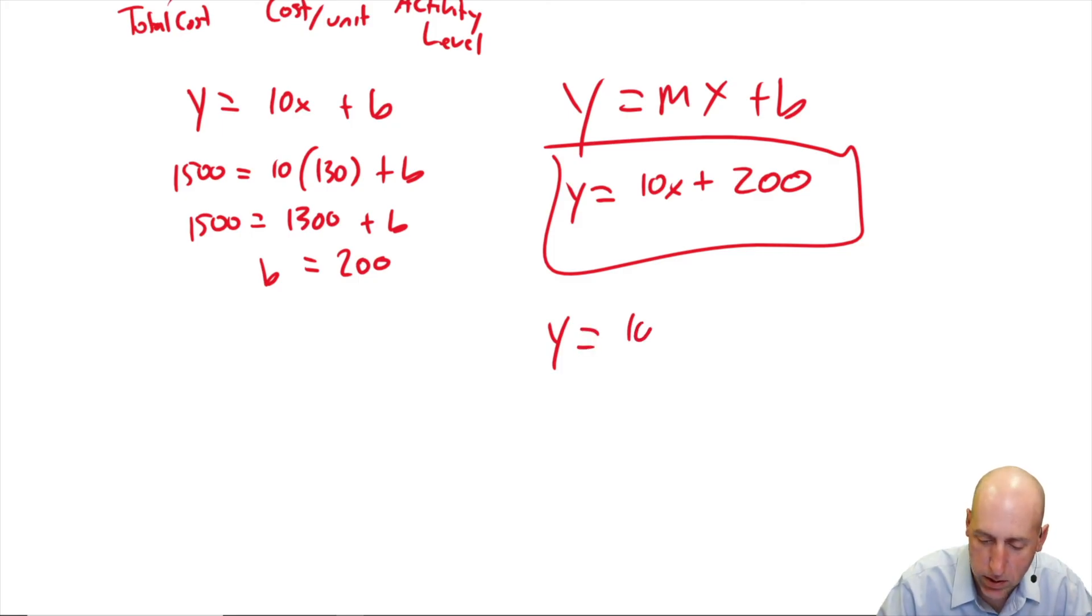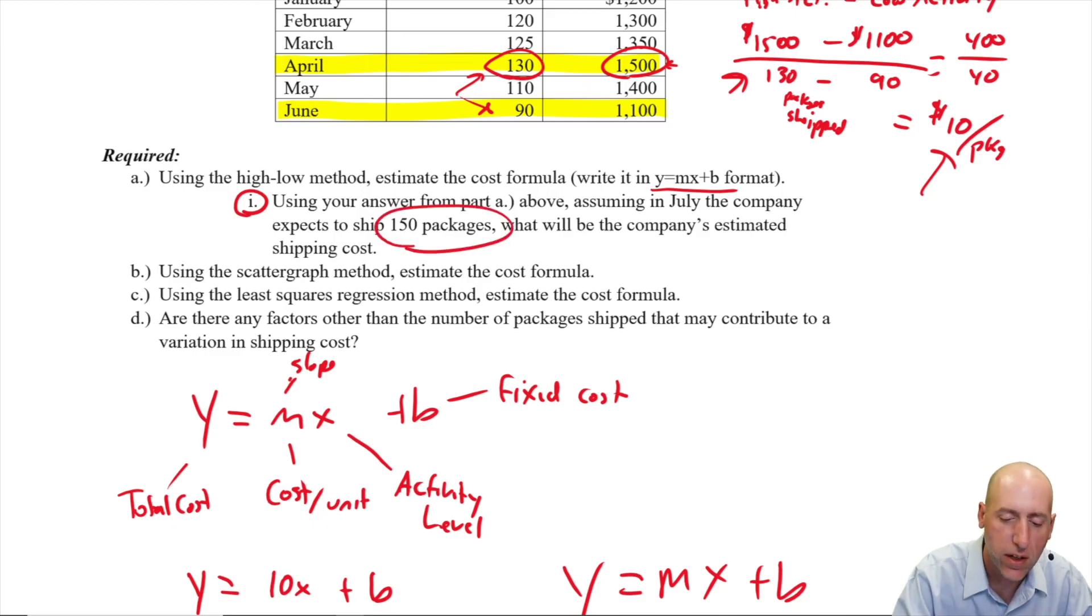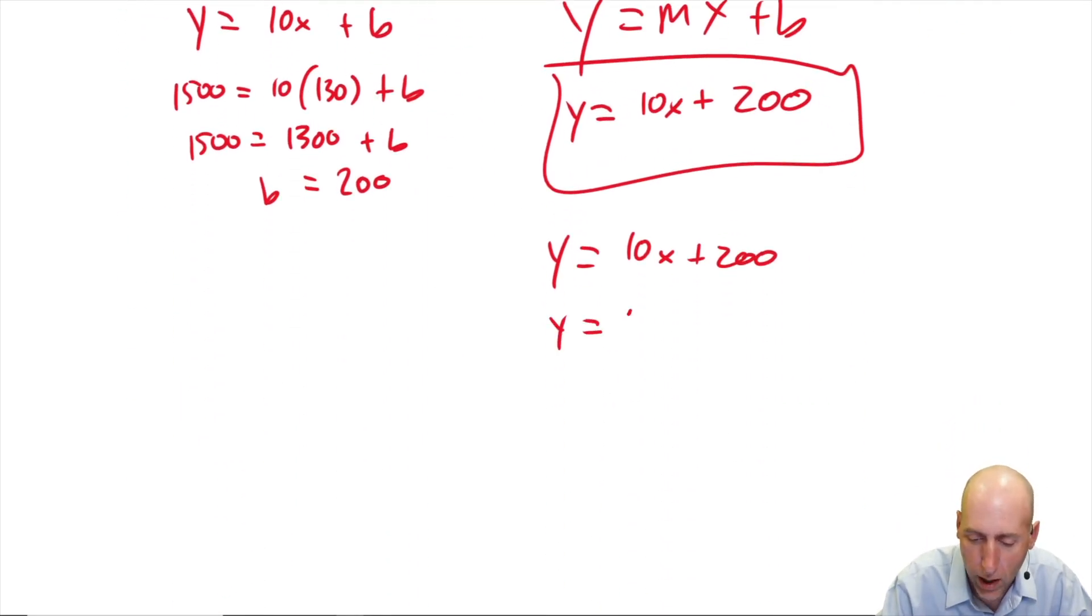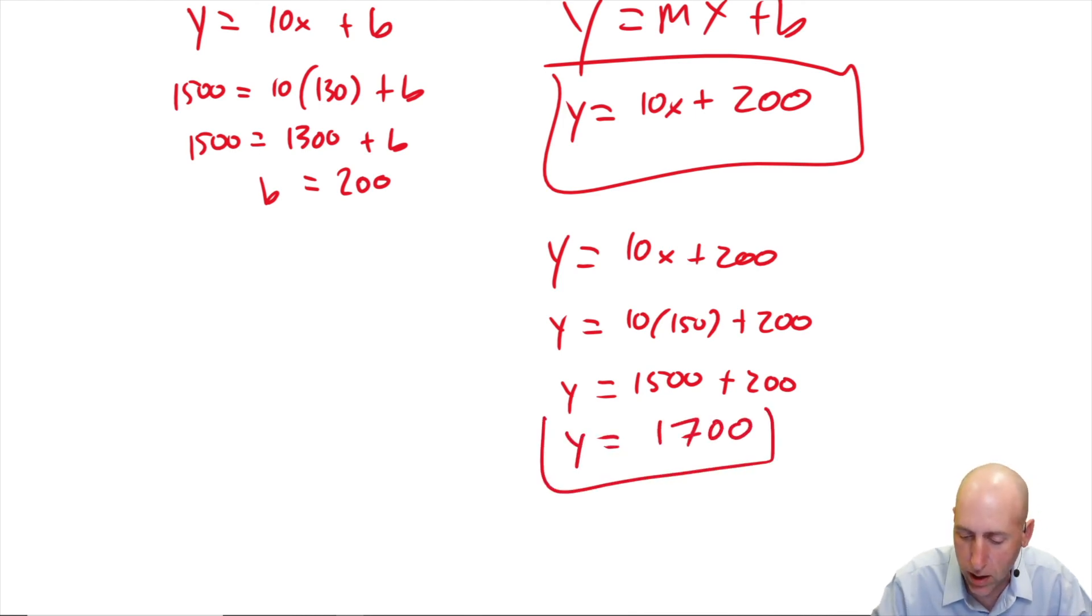Okay, so y equals 10x plus 200. What is 150 packages here? Well, that's our expected x. That's our activity level. We're expecting 150 packages. So let's plug that in for x. Y equals 10 times 150 plus 200. Let's do the math. Y equals 1500 plus 200. Y equals $1,700. So our expected cost for shipping in the next month, if we're planning to ship 150 packages, we should budget for $1,700 to be the cost to ship those packages.